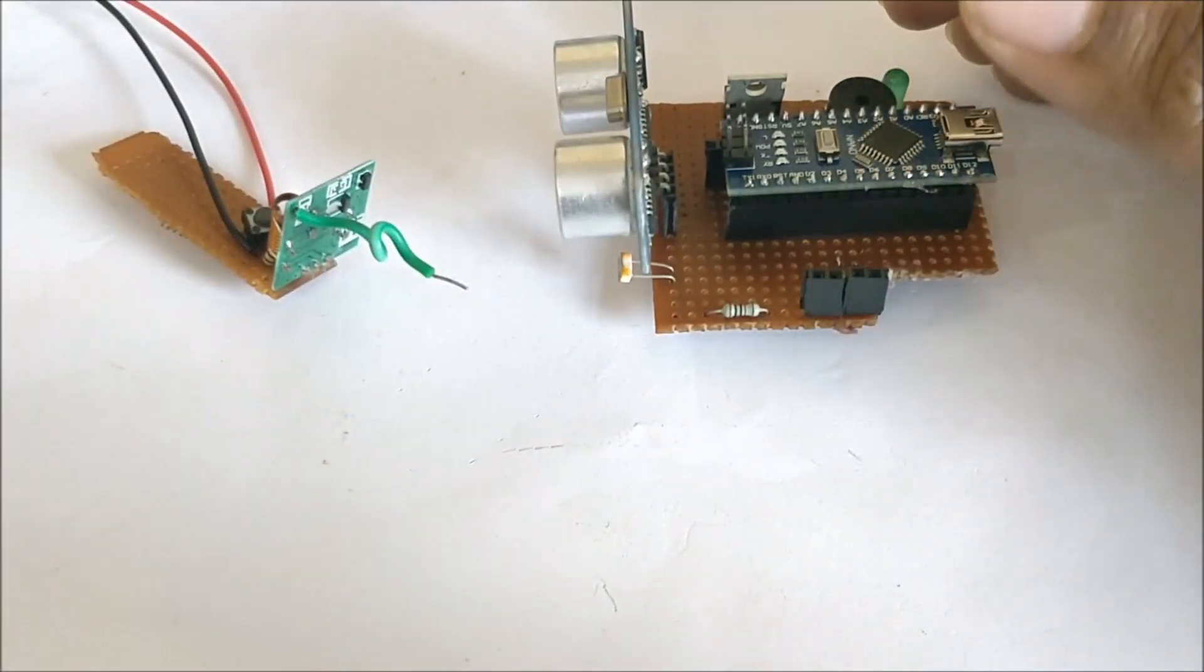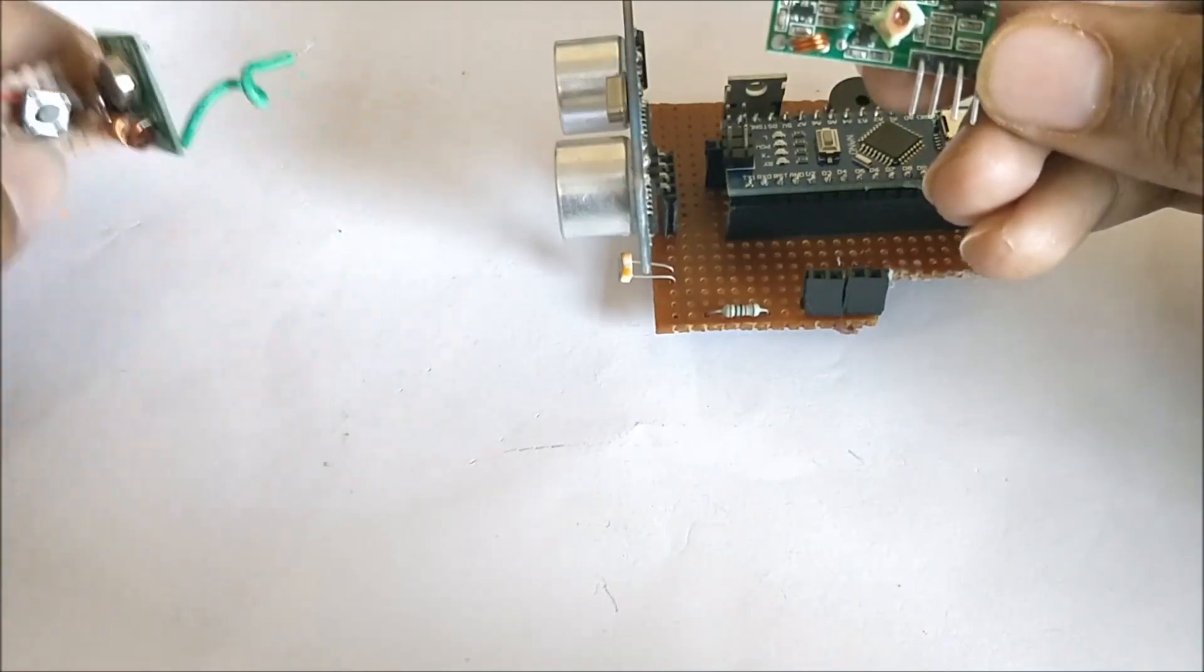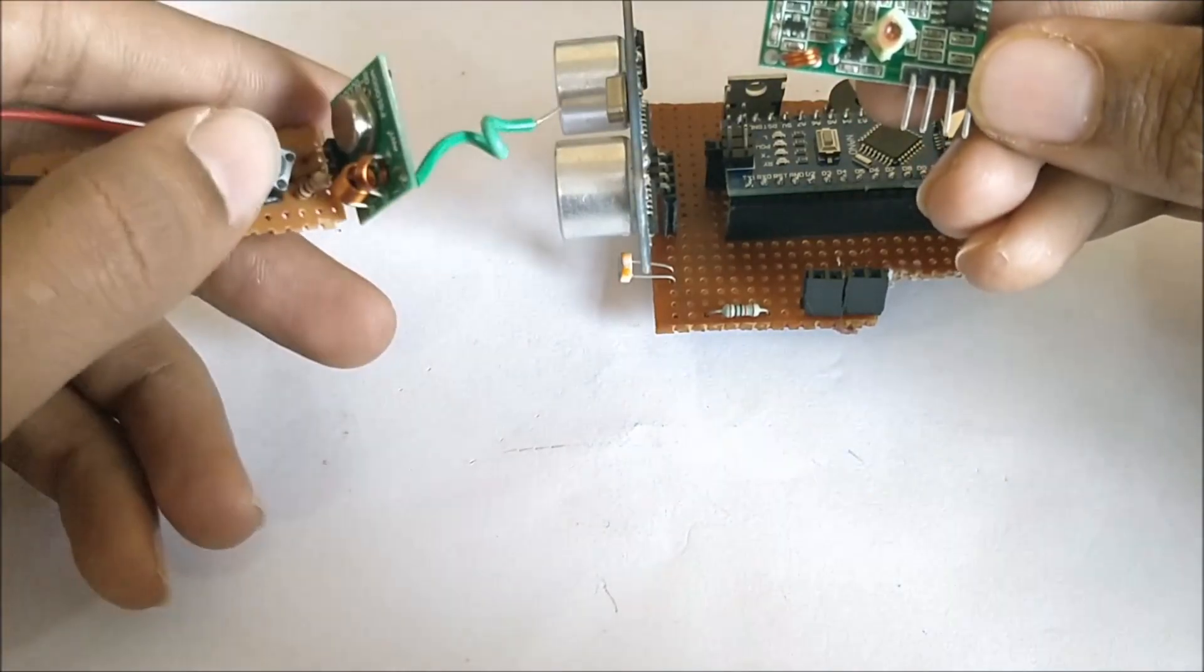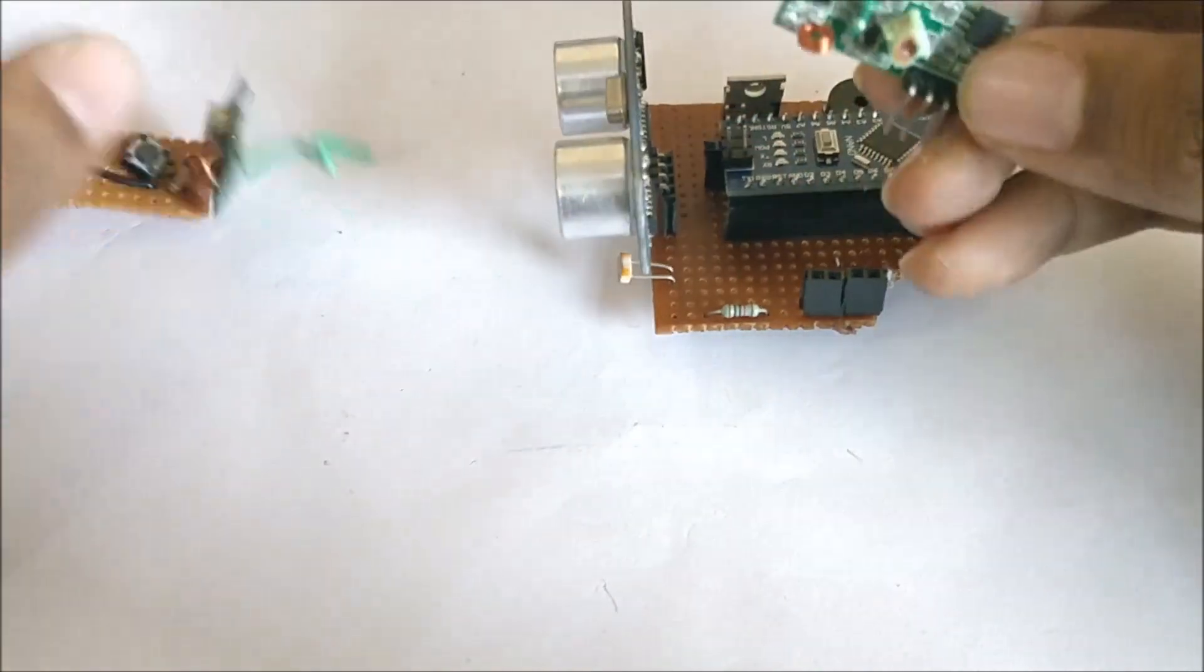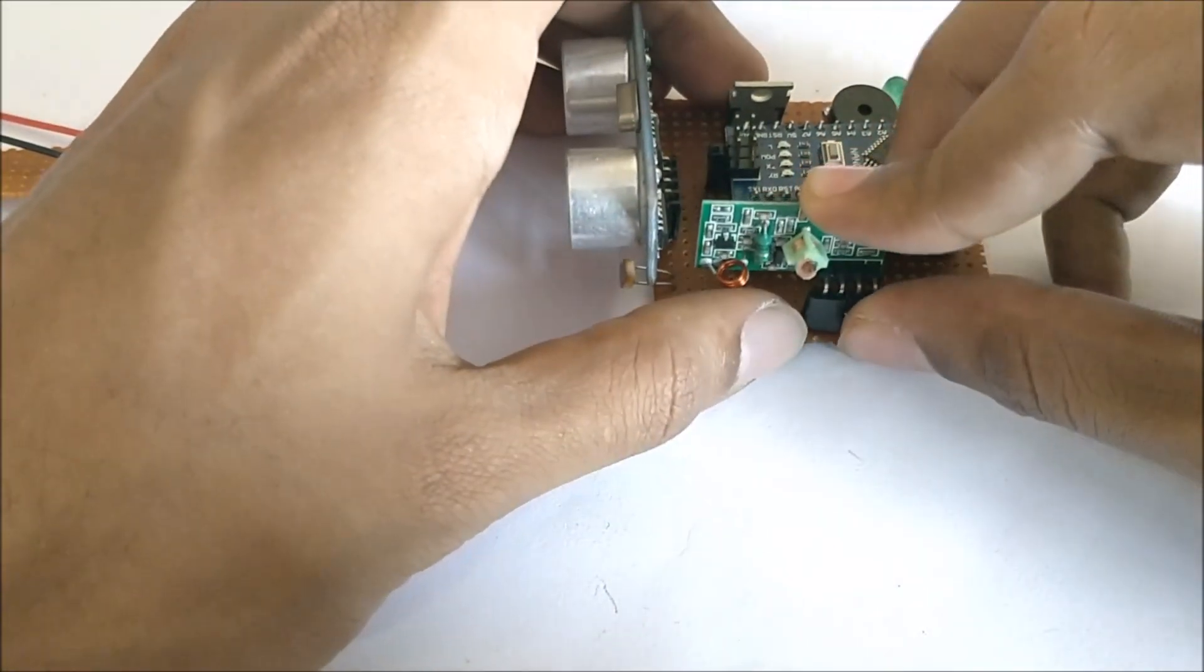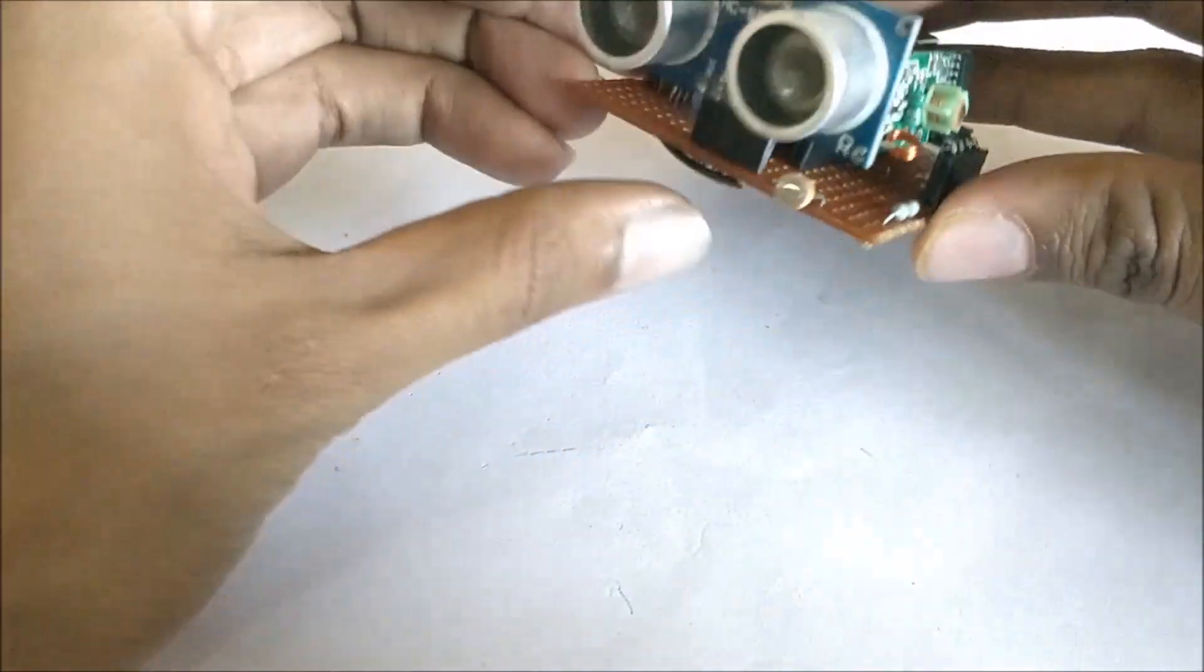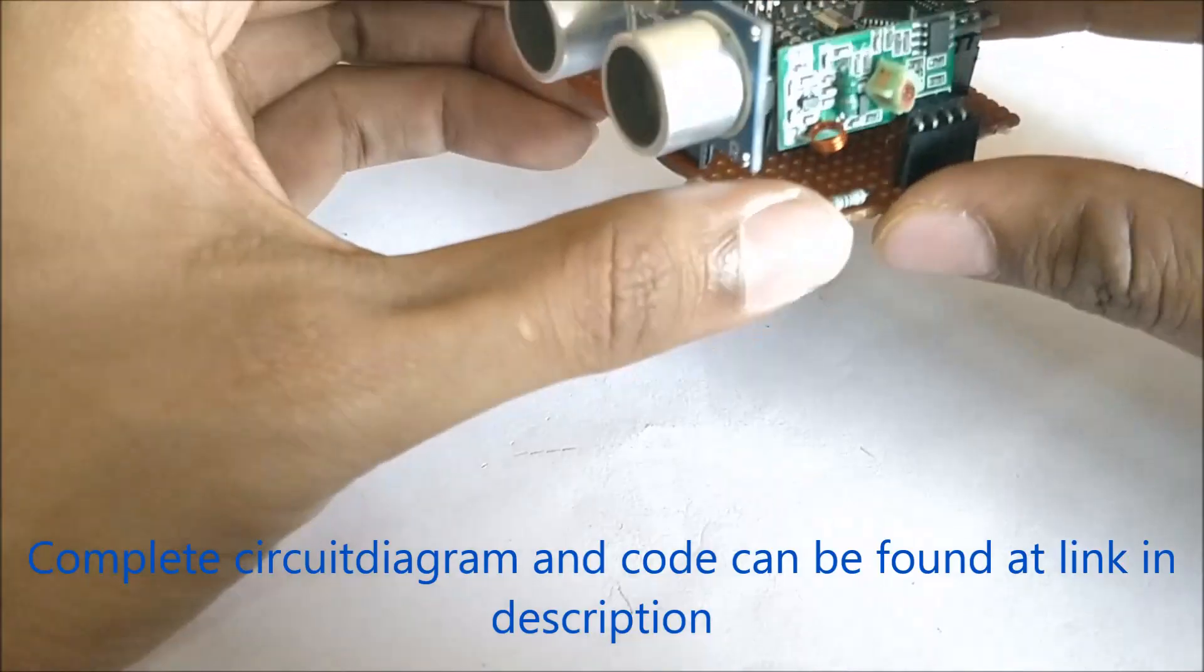We have the IR receiver over here. Whenever the user presses the button from this transmitter, the receiver will receive the signal and the Arduino will react to it. Let me plug in the receiver. Okay, now everything is in place. The ultrasonic sensor will measure the distance, and the LDR will check for the intensity of light around the blind person.